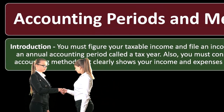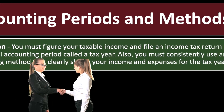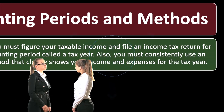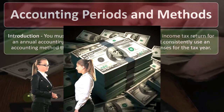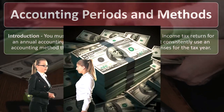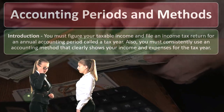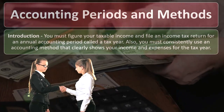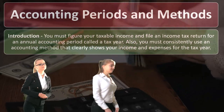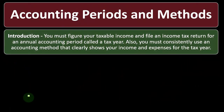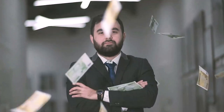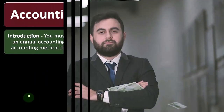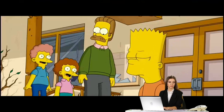In reality, those two methods are not mirror opposites of each other. We could have accounting methods that have a bit of a cash-based method and some of the accrual-based method. You must consistently use an accounting method that clearly shows your income and expenses for the tax year. So we have to have income reported for a year's time frame, and we have to have an accounting method — the two primary ones being accrual and cash — that we are consistent on.